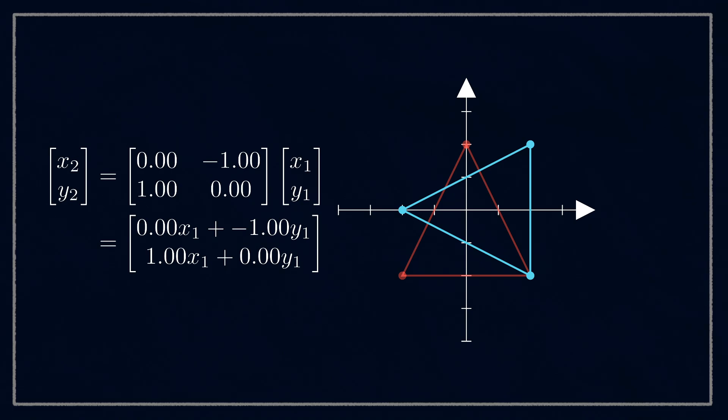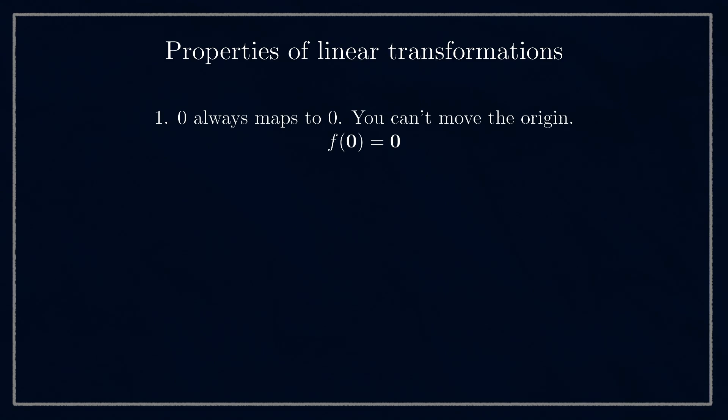You'll also notice that no matter what we do, we can never translate it. Again, we'll solve that problem another day. But that's actually one of the key properties of a linear transformation. There are a bunch of special characteristics these functions have, but here are three. Zero always maps to zero. As we just saw, there's no way to move the origin.